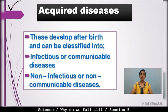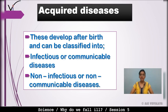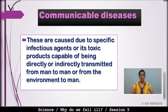Acquired diseases develop after birth and can be classified into infectious and non-infectious diseases. Infectious diseases are also known as communicable diseases. These are caused due to specific infectious agents or their toxic products, capable of being directly or indirectly transmitted from man to man, or from the environment to man.